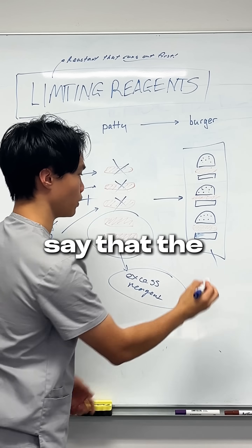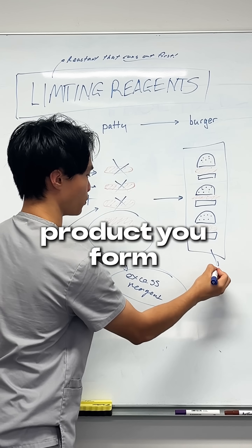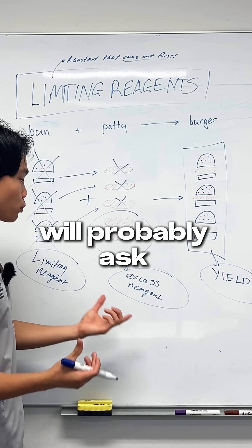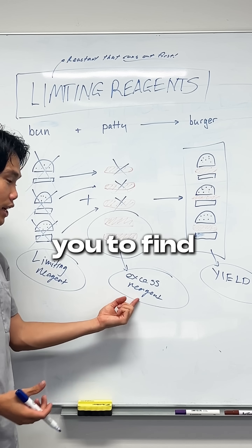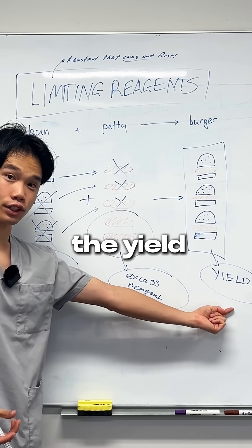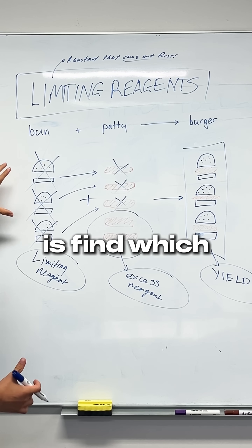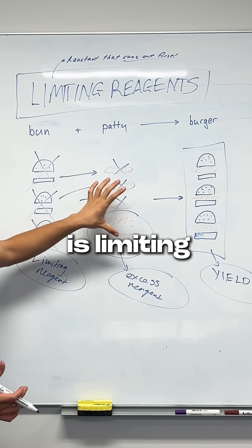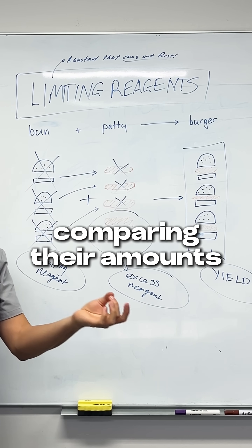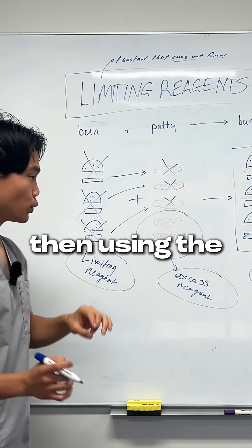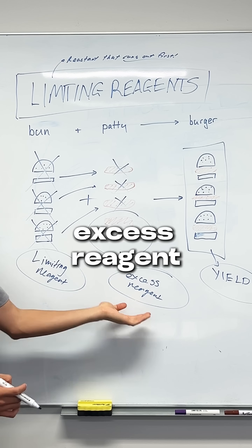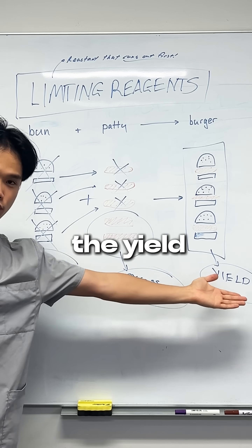We can also say that the total amount of product you form is the yield. In your mod 2 exams, your teachers will probably ask you to find the excess reagent or find the yield. All you need to do is find which of your reactants is limiting by converting to moles and comparing their amounts, then using the moles of whatever is limiting to find the excess reagent or to find the yield.